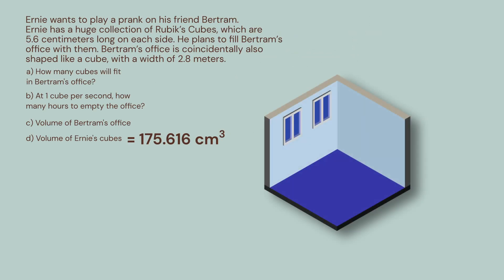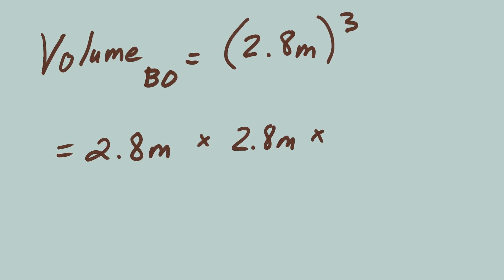Bertram's office is also a cube. We know that the length of one side is 2.8 meters, so using that formula for the volume of a cube again, we can find the volume of Bertram's office. The quantity 2.8 meters cubed, which is the same thing as 2.8 times 2.8 times 2.8, which equals 21.952 meters cubed.